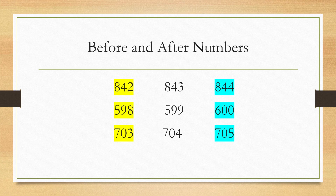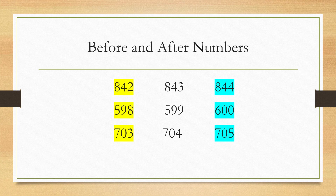The next number is 599. To find out the after number, we count forward and the number we get is 600. And to find out the before number, we count backward, so the number we get is 598. The next number is 704. The number after 704 is 705 and the number before 704 is 703.